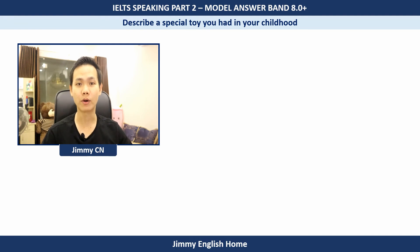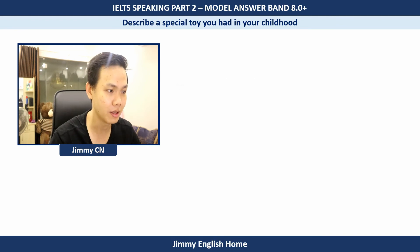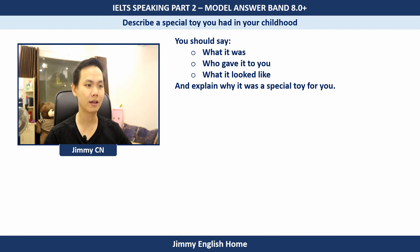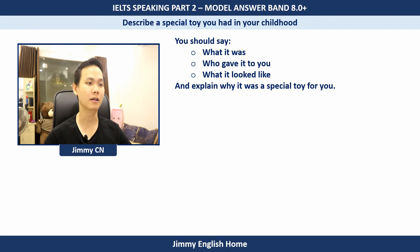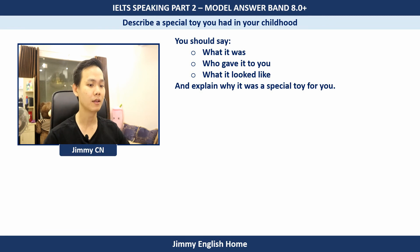To make sure you can understand my points correctly, I'm going to speak in Vietnamese. The topic is 'Describe a special toy you had in your childhood.' First, let's look at some suggestions and cues: you should say what it was, who gave it to you, what it looked like, and explain why it was special. One thing to note first: you are not required to follow these cues. As long as your speech is logical, natural, and your ideas develop coherently, that's fine — you can create your own cues.